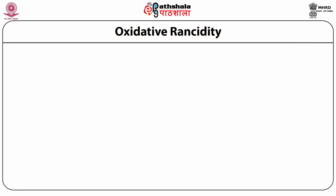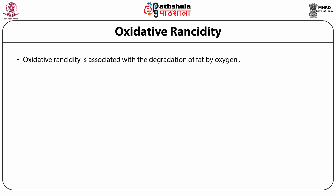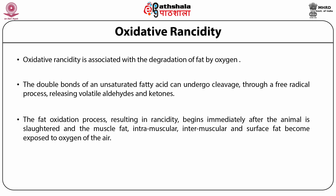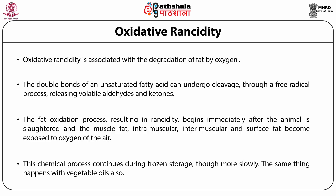Oxidative rancidity is associated with the degradation of fat by oxygen. The double bonds of an unsaturated fatty acid can undergo cleavage through a free radical process releasing volatile aldehydes and ketones. The fat oxidation process resulting in rancidity begins immediately after the animal is slaughtered and the muscle fat — intramuscular, intermuscular and surface fat — becomes exposed to oxygen of the air. This chemical process continues during frozen storage, though more slowly. The same thing happens with vegetable oils also.